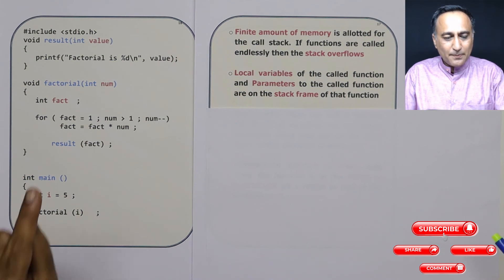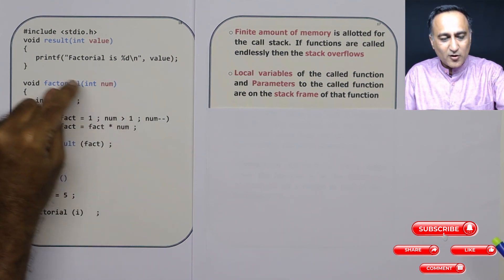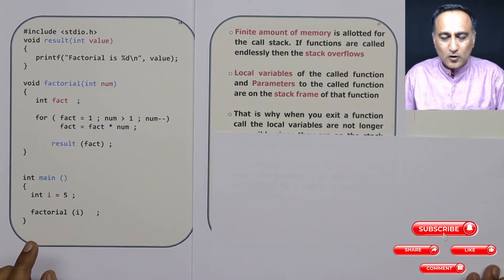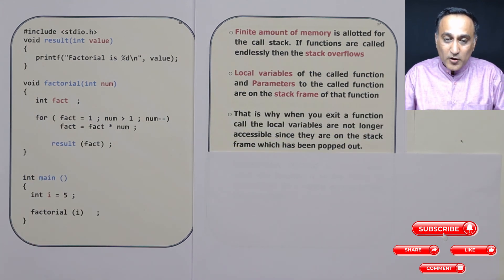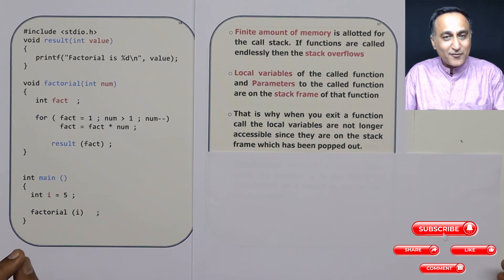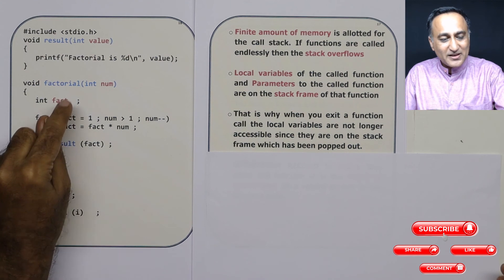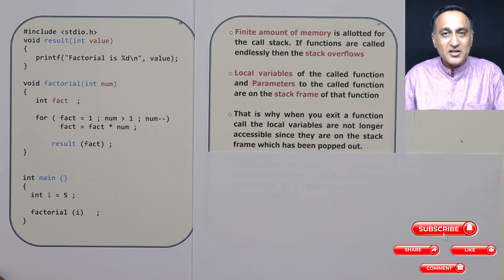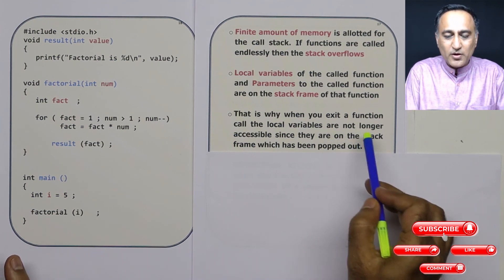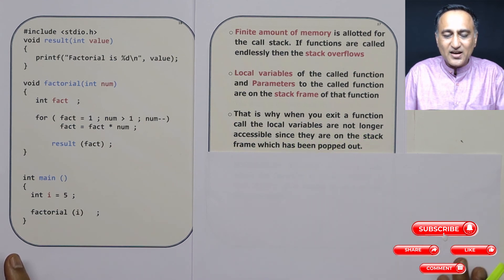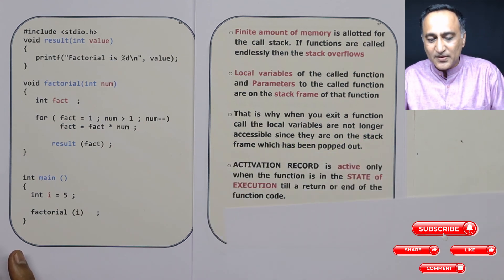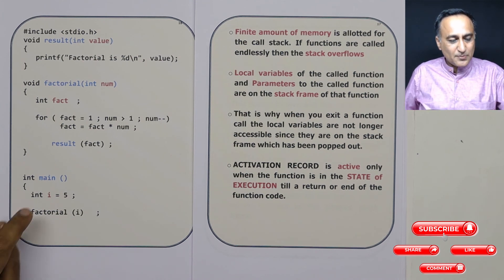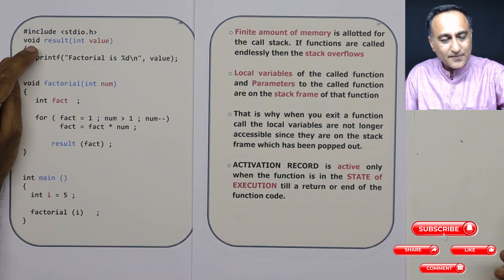Local variables and parameters — such as 'num' and 'fact' — are in the activation record of factorial. When you pop out the activation record or stack frame of that function, the parameters as well as the local variables are no longer accessible, because that particular memory location is no longer reachable. That data frame has been removed from memory — that's why when you exit a function you are not able to access its local variables.